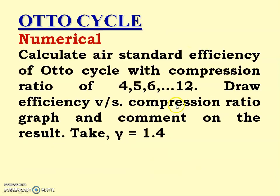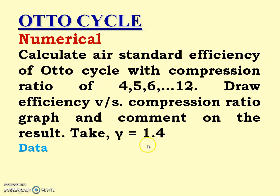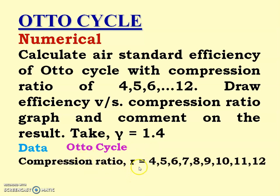Now let us calculate the next numerical: calculate the air standard efficiency of the Otto cycle with compression ratios of 4, 5, 6, up to 12. Draw the efficiency versus compression ratio graph and comment on the result. Take gamma = 1.4. The data given is: Otto cycle with R = 4, 5, 6, 7, 8, 9, 10, 11, and 12.